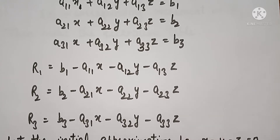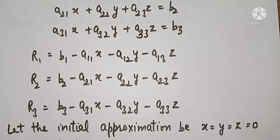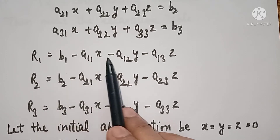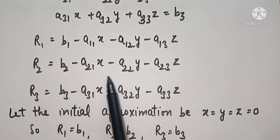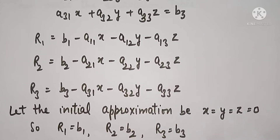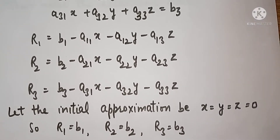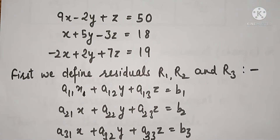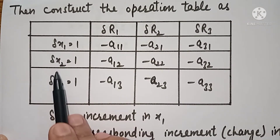Then we have an initial approximation. We will raise the values of X, Y and Z. We will build a table where del x1, del x2 and del x3 are the increments in the variables.